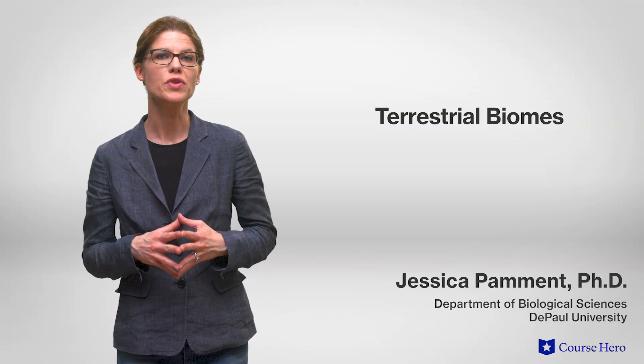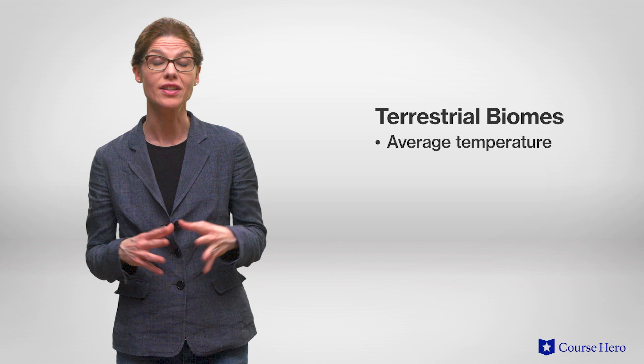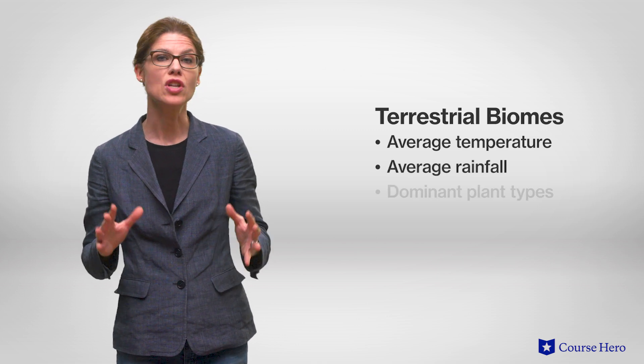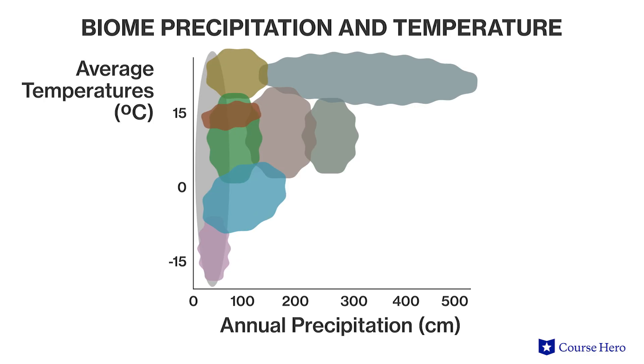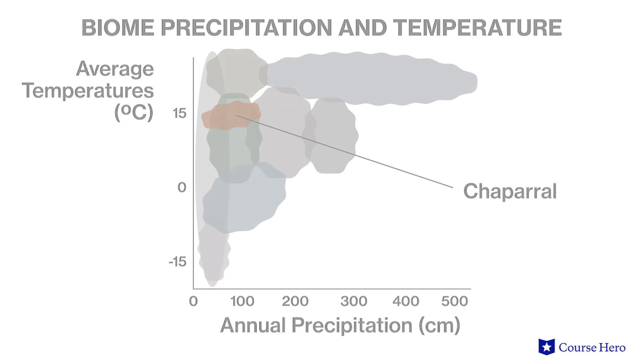Terrestrial biomes are large geographic regions on land defined by their average temperature, average rainfall, and dominant plant types. If the climate in two separate areas is similar, you can expect to find the same type of biome in both these regions. Let's survey the major terrestrial biomes, beginning near the equator and finishing close to the poles.